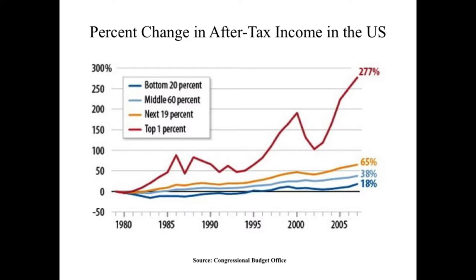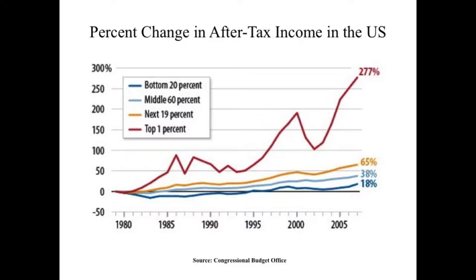This trend is also similar even after tax. This graph shows the percent change in after-tax income in the United States from 1979. The red line shows the top 1% after-tax income. From 1979, the top 1% after-tax income has increased almost 277%, while the increase for the bottom 20%, middle 60%, and others are still modest — like 18%, 38%, and 65%.